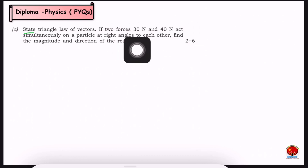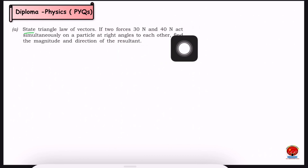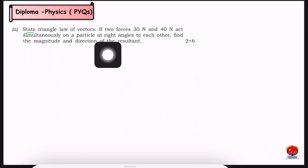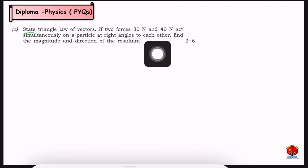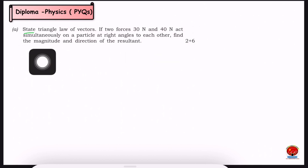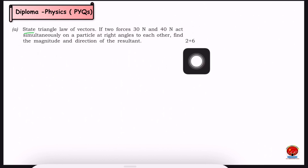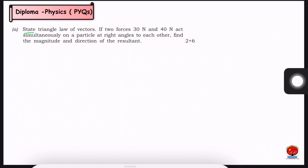If two forces — 30 Newtons and 40 Newtons — act simultaneously on a particle at right angles to each other, find the magnitude and direction of the resultant. This question carries two marks and six marks.